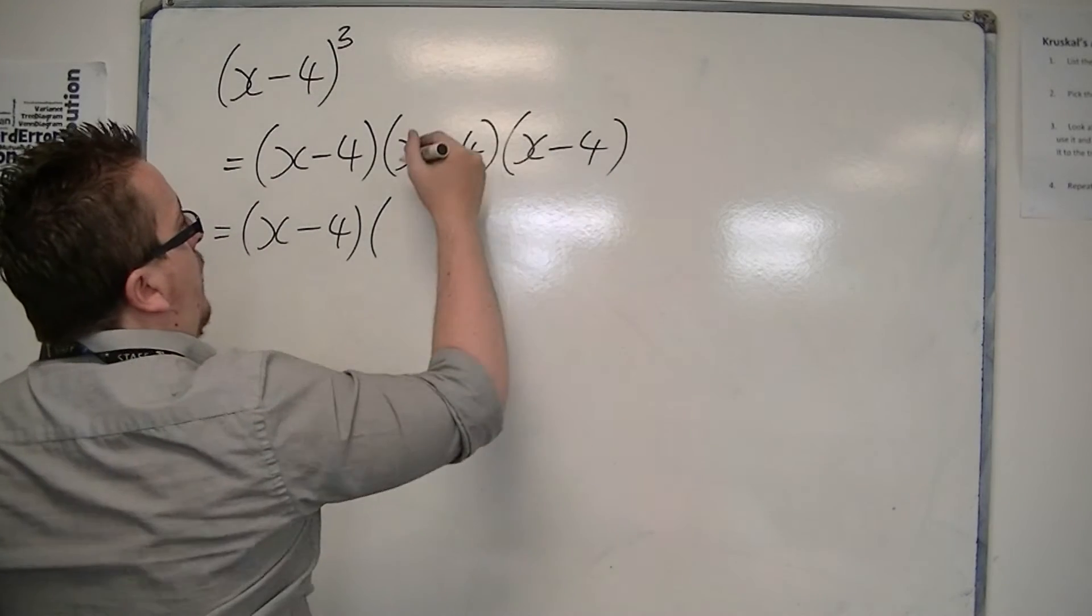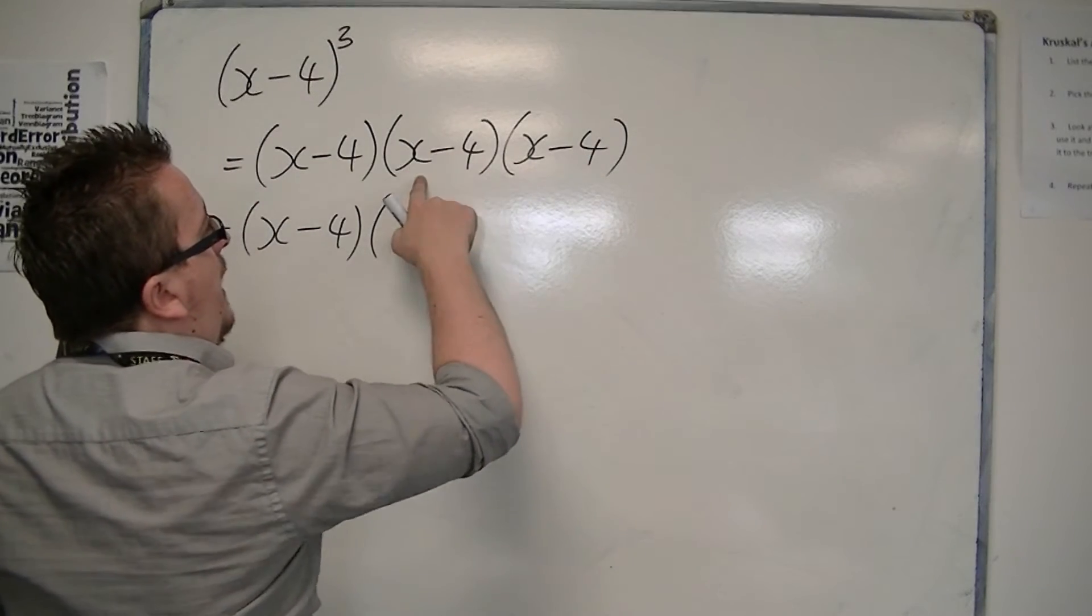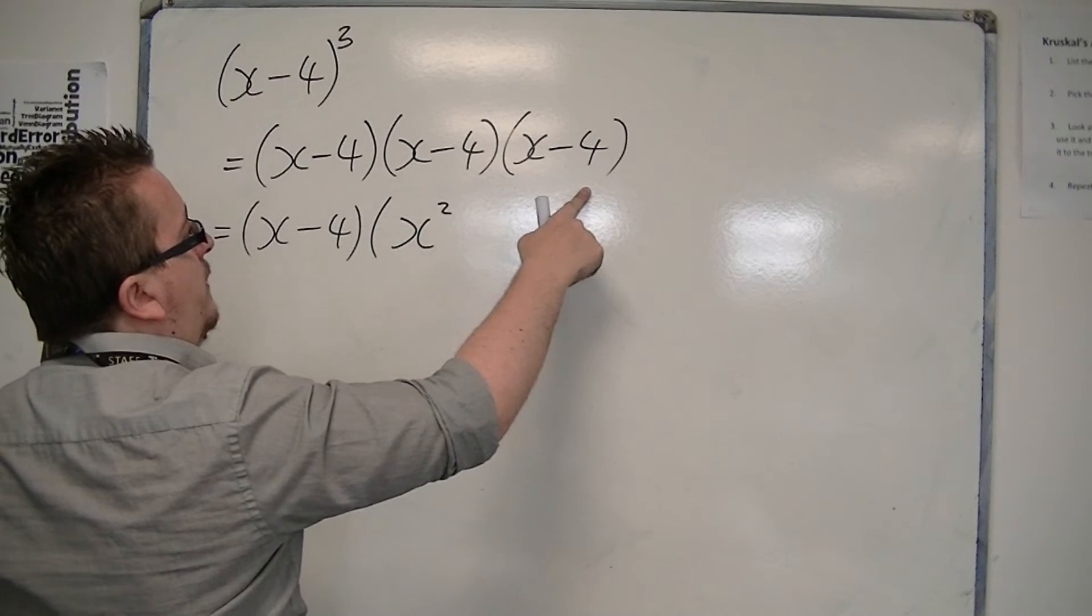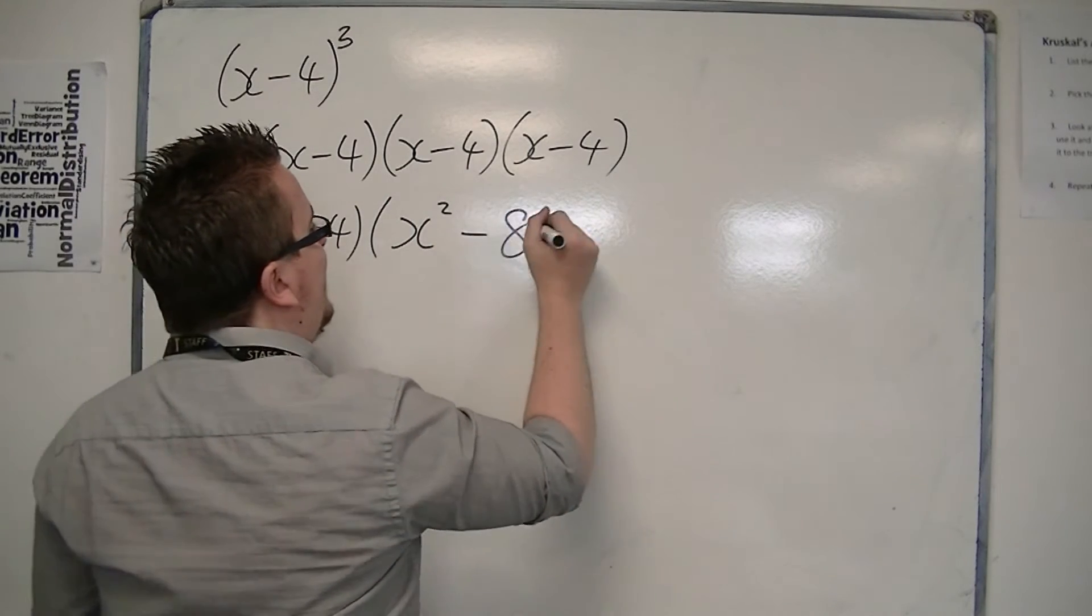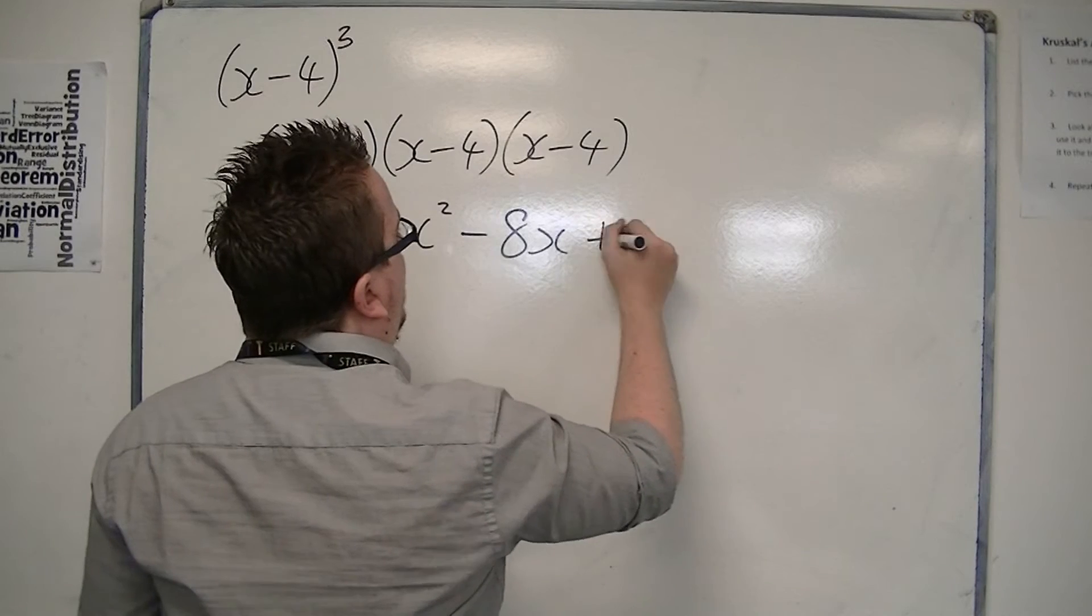So we've got x squared, x times minus 4 is minus 4x, we've got another minus 4x that's minus 8x, and then we've got minus 4 times minus 4 is 16.